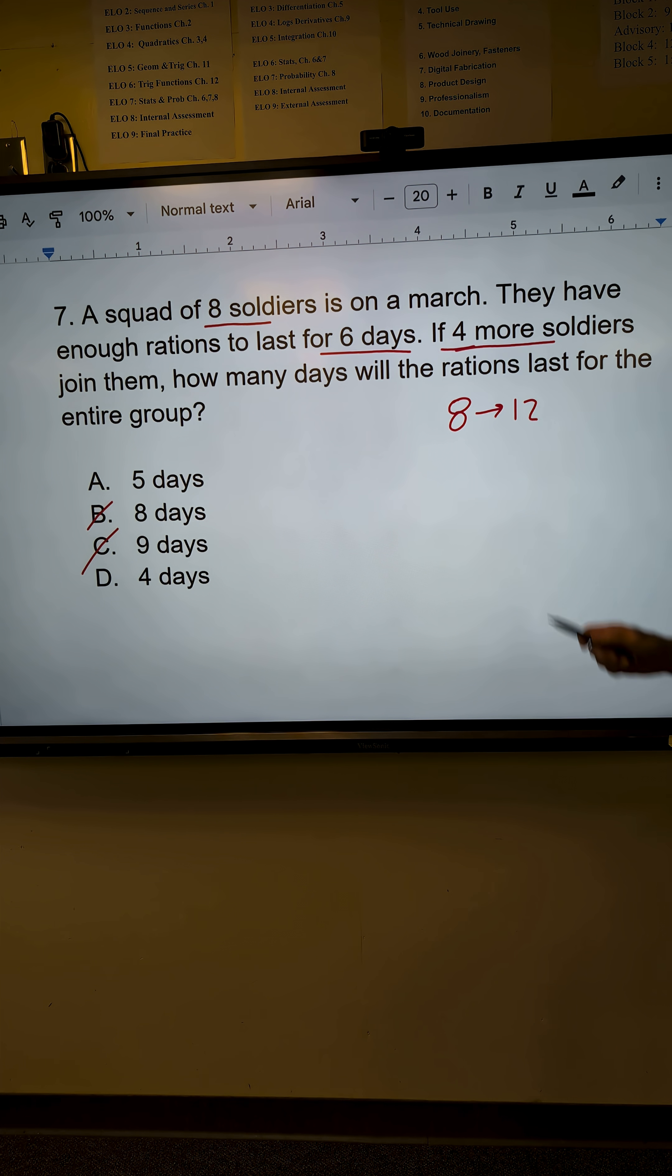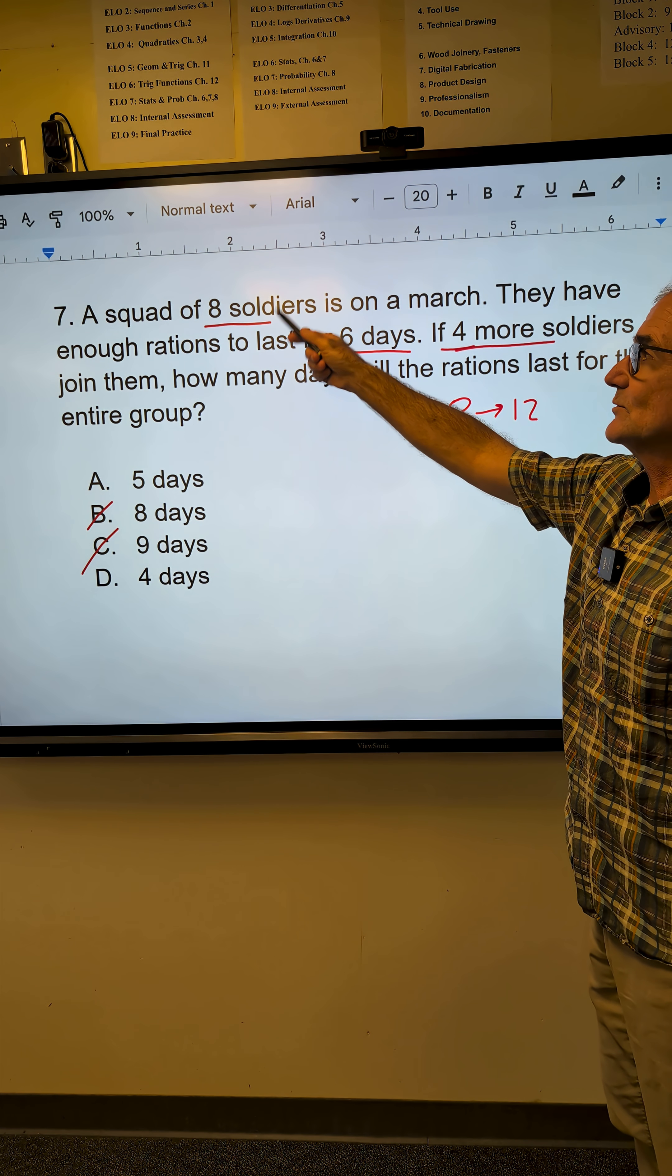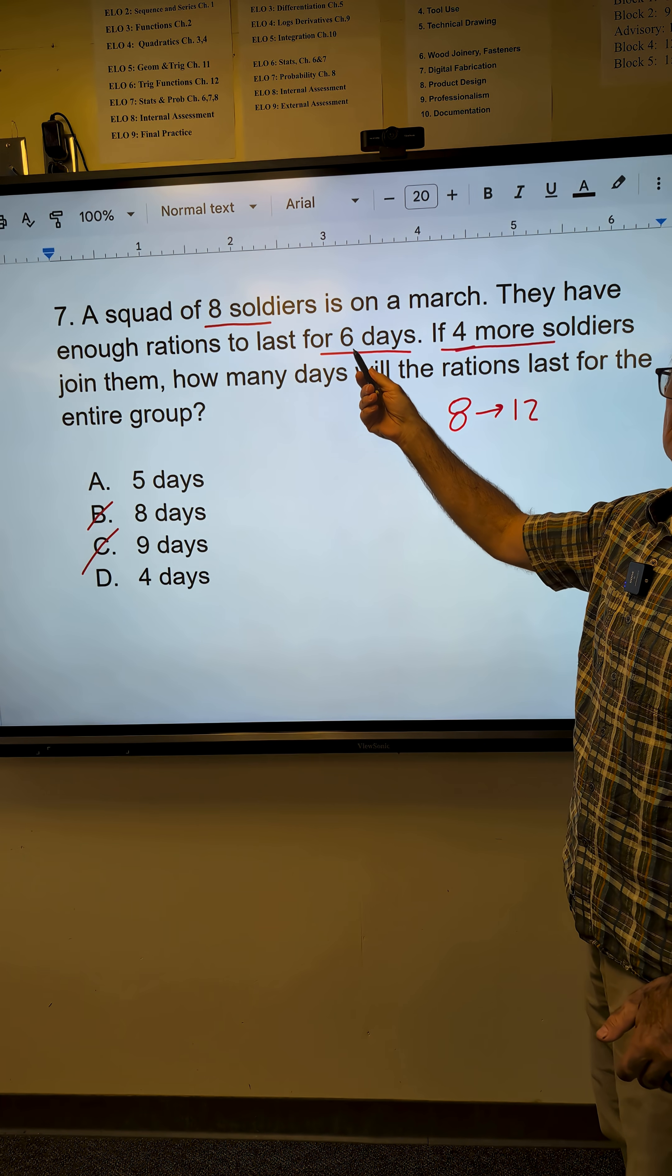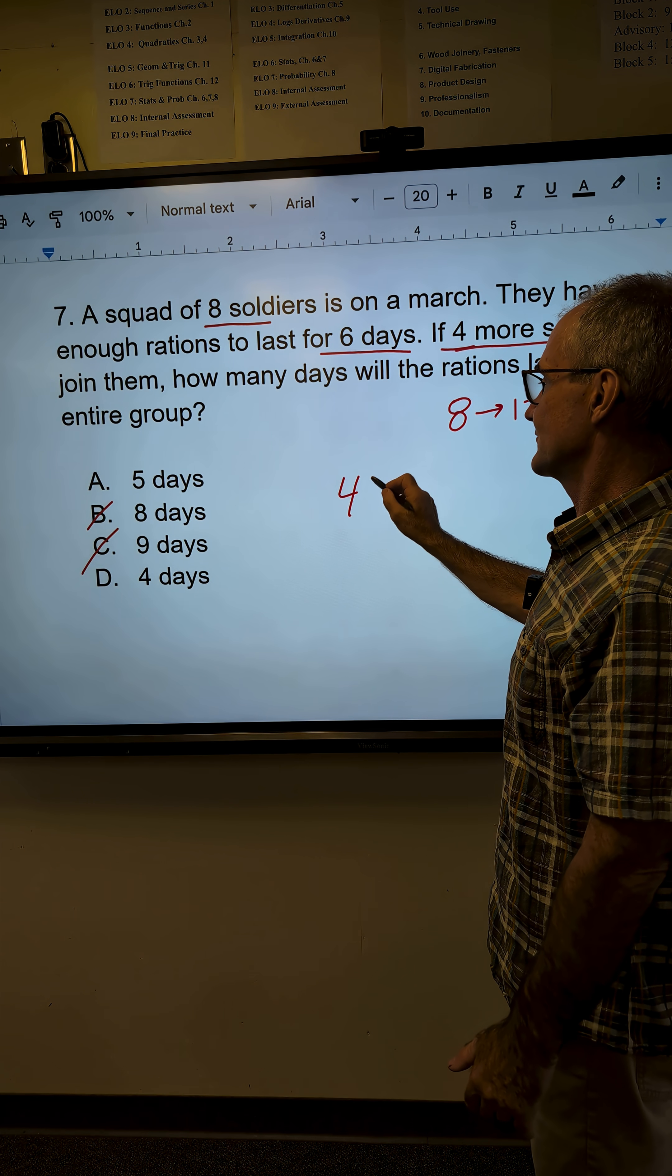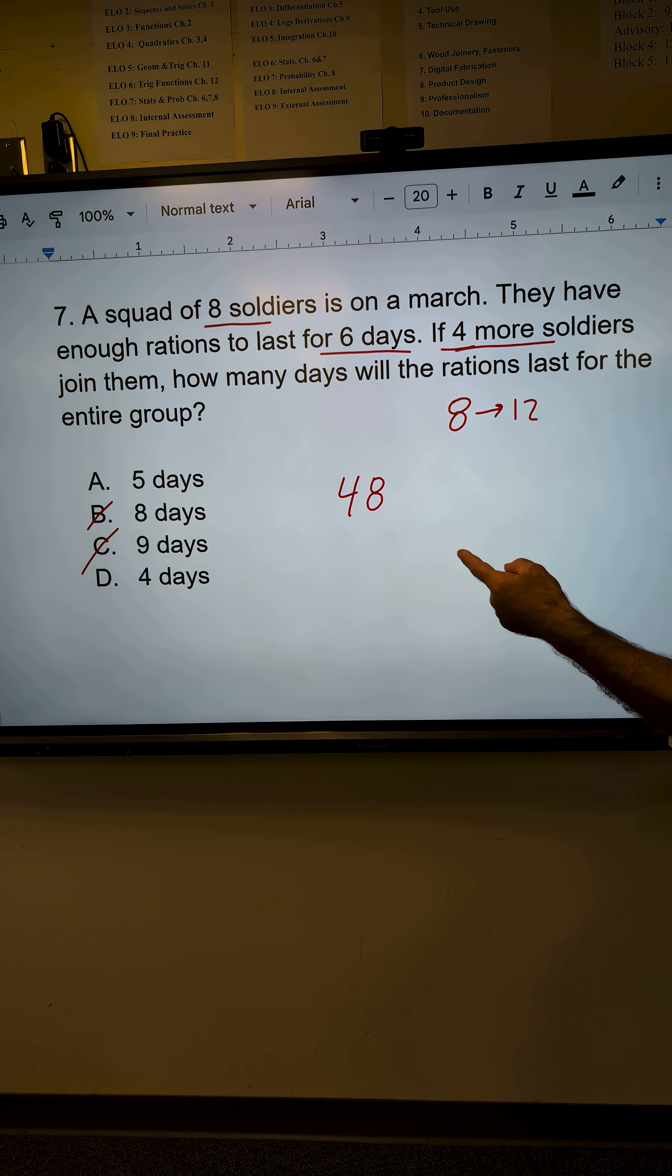What I'm going to do here is I'm going to say I have enough food for one soldier for 48 days. So I take eight soldiers for six days. That gives me 48 soldier days, so 48 days for one soldier.